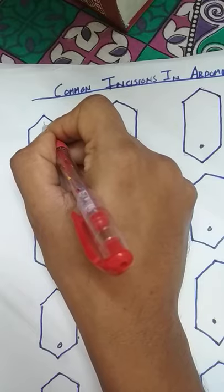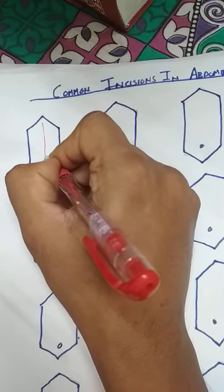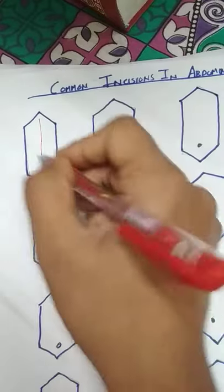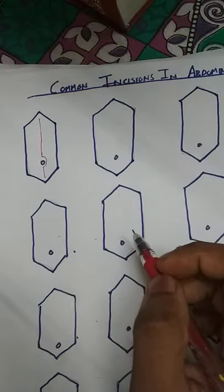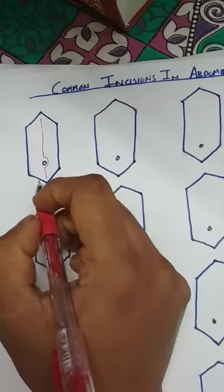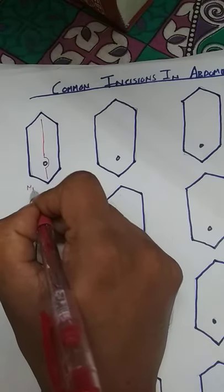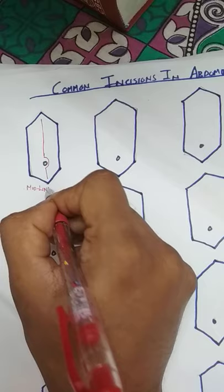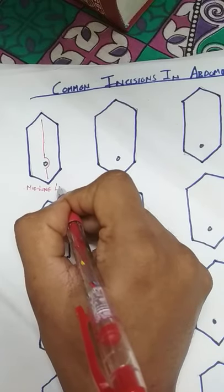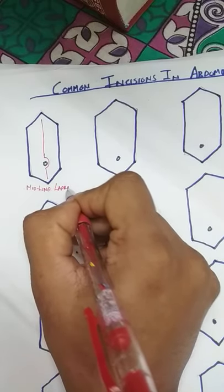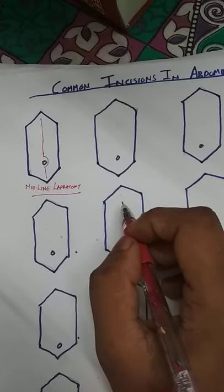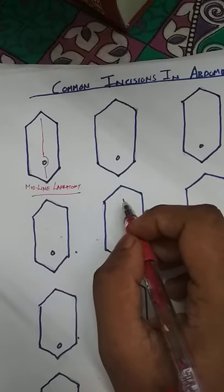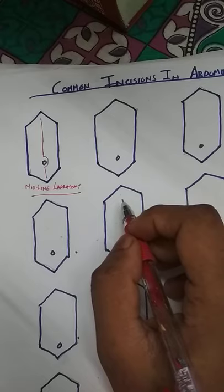So the incision would be like this. This incision is called the midline laparotomy, and it is basically used for various kinds of surgical procedures — it is a general surgical incision.